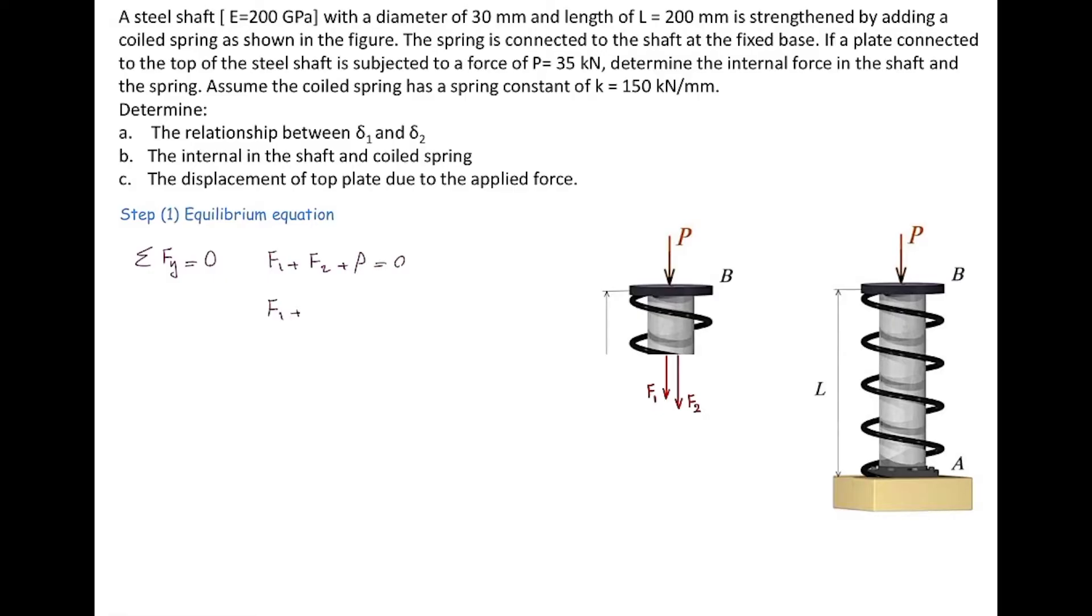In this equation, there are two unknowns, F1 and F2, and P as given. So the problem is indeterminate because there is just one equation, but there are two unknowns.